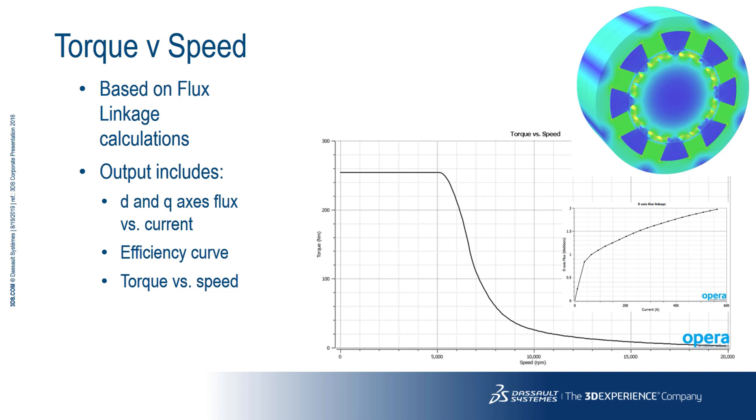The torque versus speed analysis provides a quick way of evaluating the torque speed characteristics based on flux linkage calculations. The output includes d and q axis flux versus current, efficiency curve and also torque versus speed.